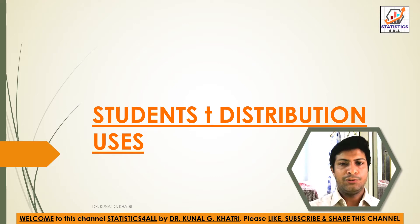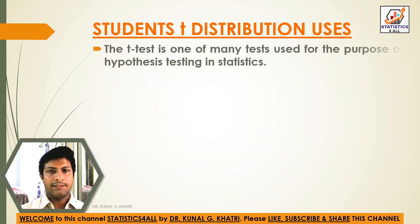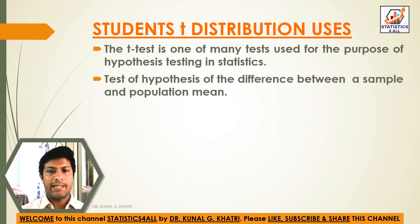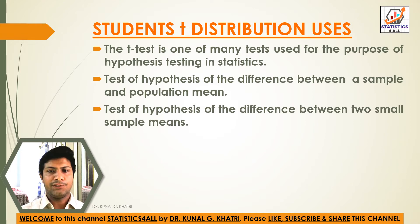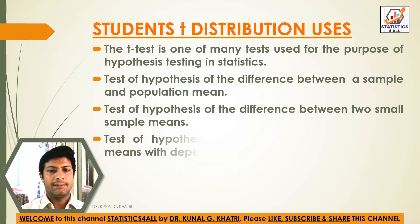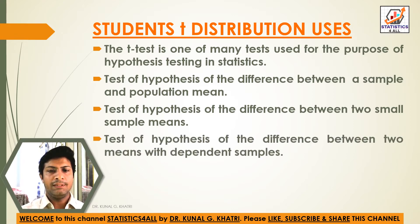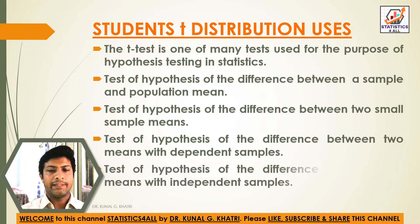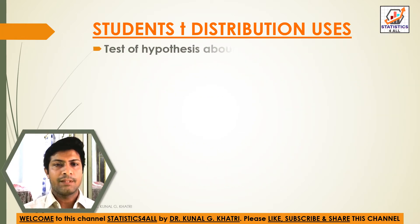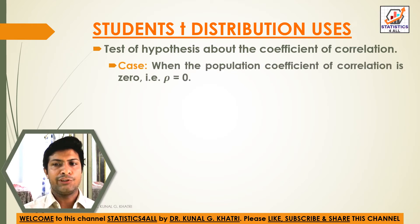Student's t-distribution uses the t-test, which is one of the many tests used for the purpose of hypothesis testing in statistics. Uses include: test of hypothesis of the difference between a sample and a population mean; test of hypothesis of the difference between two small sample means; test of hypothesis of the difference between two means with independent samples; and test of hypothesis about the coefficient of correlation when the population coefficient of correlation is 0, i.e., Rho equals 0.